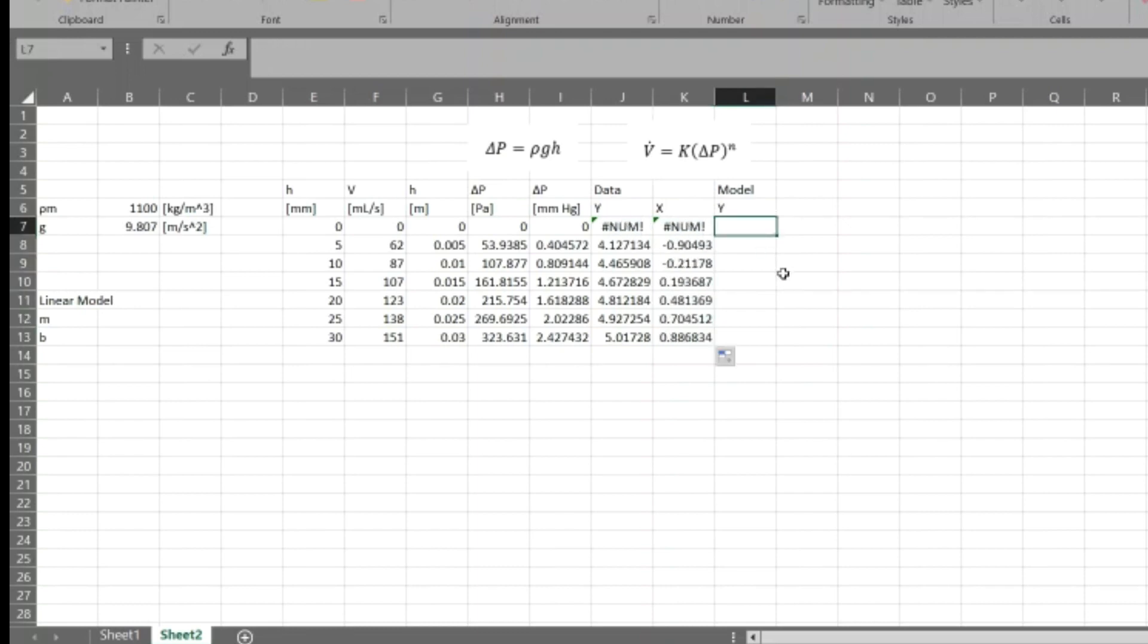X is equal to the natural log of delta P. Let's use our millimeters of mercury and drag that down. And then we've got our model, which is equal to Y is equal to M times X plus B. We want to make sure that our parameters are the same for each one of these values. So we'll add the dollar signs. And these are all zero because our parameters right now we don't have anything in there. So let's add a one and a one just to get us fairly close.